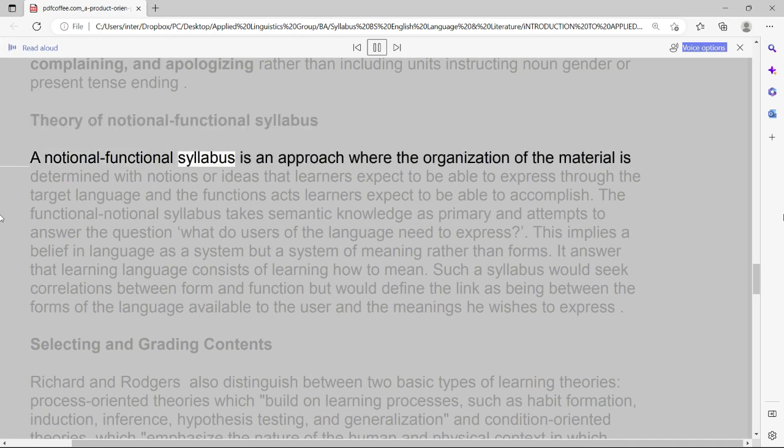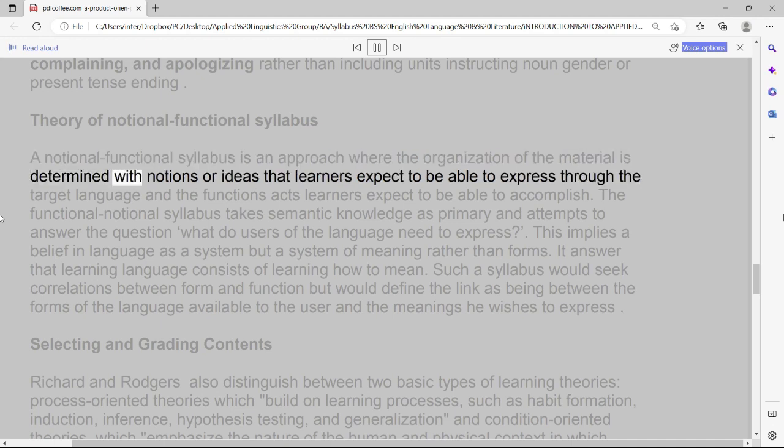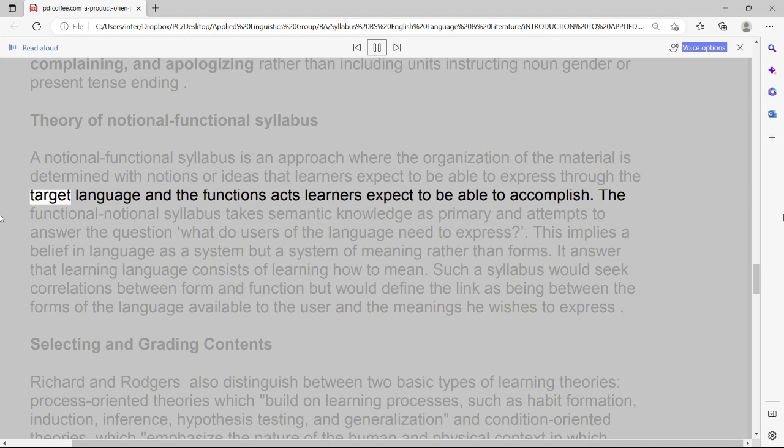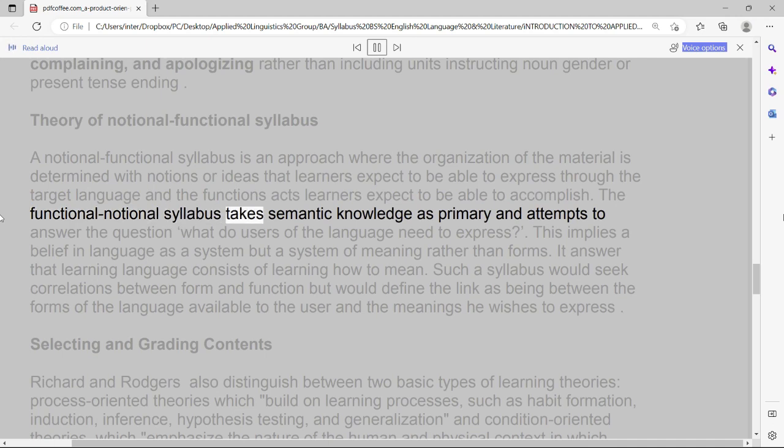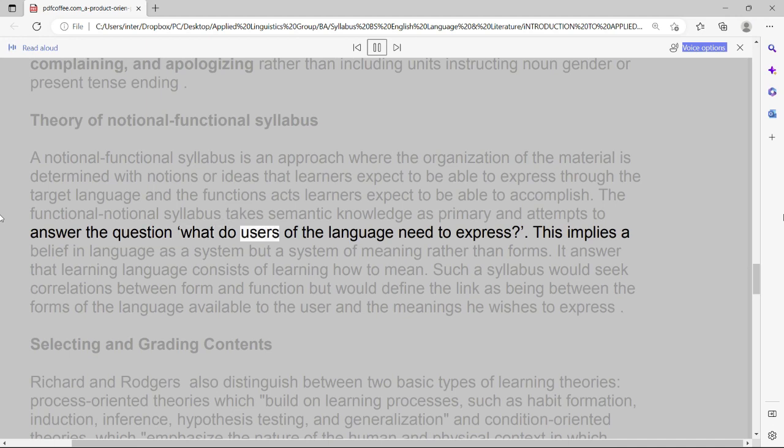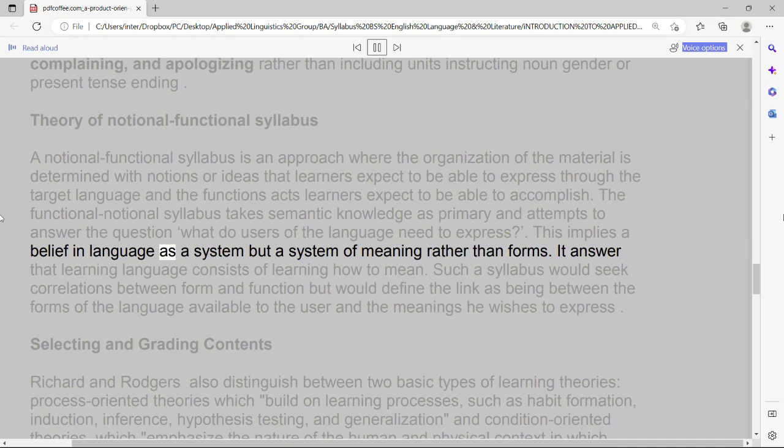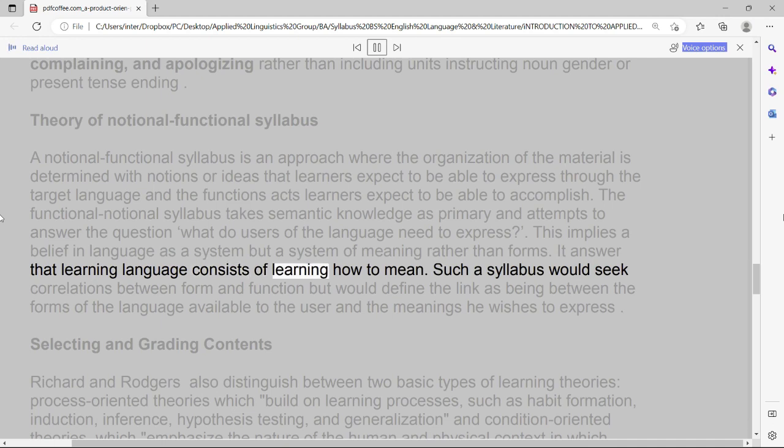Theory of Notional Functional Syllabus. A notional functional syllabus is an approach where the organization of the material is determined with notions or ideas that learners expect to be able to express through the target language and the functions acts learners expect to be able to accomplish. The functional notional syllabus takes semantic knowledge as primary and attempts to answer the question, what do users of the language need to express? This implies a belief in language as a system but a system of meaning rather than forms.